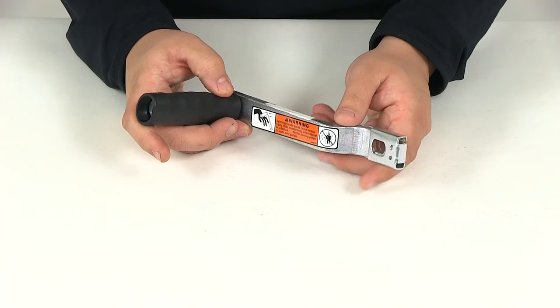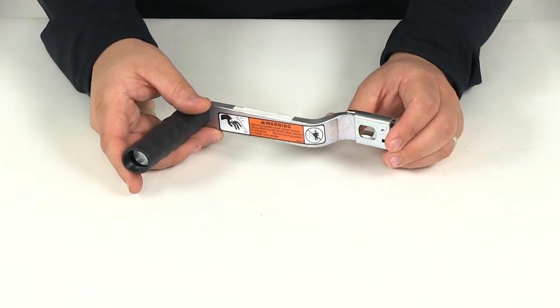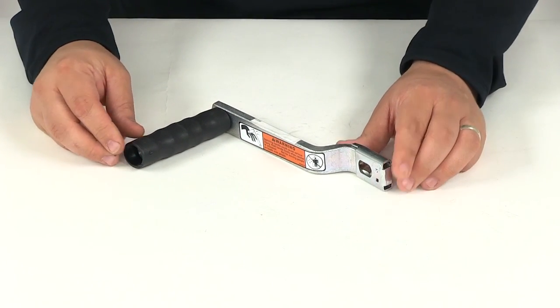That's going to do it for our review of part number DL70336. This is the Dutton Lanson replacement winch handle.